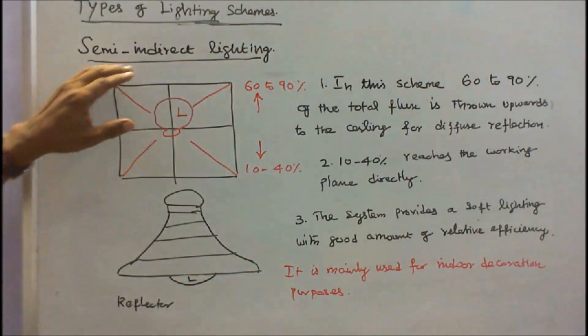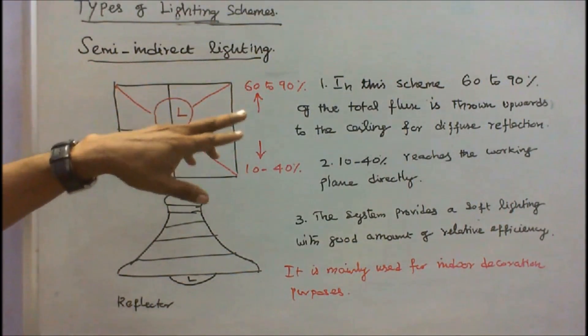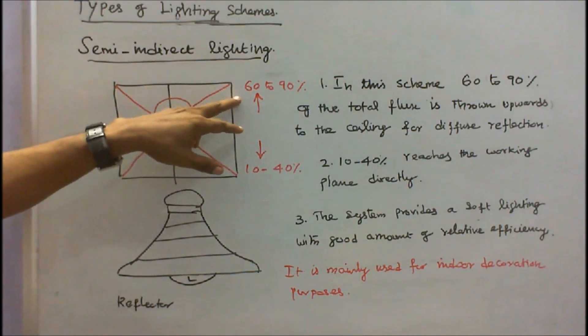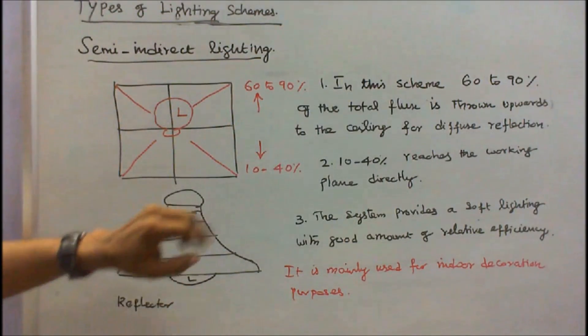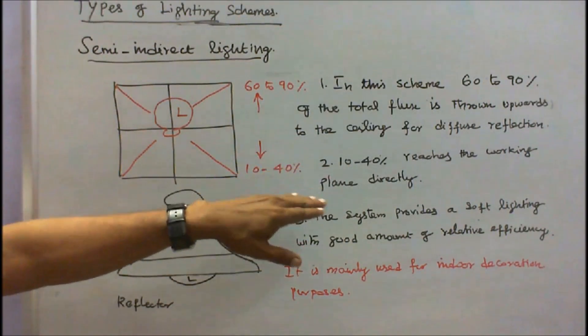Next is semi-indirect lighting. In this scheme, 60 to 90% of total flux is thrown upward to the ceiling for diffuse reflection. 10 to 40% reaches the working plane directly.